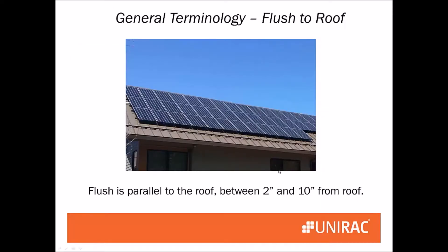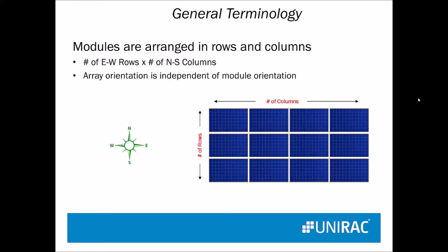When we talk about flush, we mean parallel to the roof, between about two and ten inches off the roof — that is still considered flush. We talk about modules being arranged in rows and columns similar to counting: across are rows and down are columns. It doesn't matter whether the modules are landscape or portrait; they're still rows across and columns up and down.